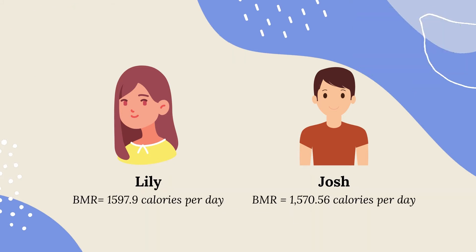Lily's BMR is 1,597.9 calories per day, while Josh's BMR is 1,570.56 calories per day. Once you get your BMR, you have to find out your activity level.